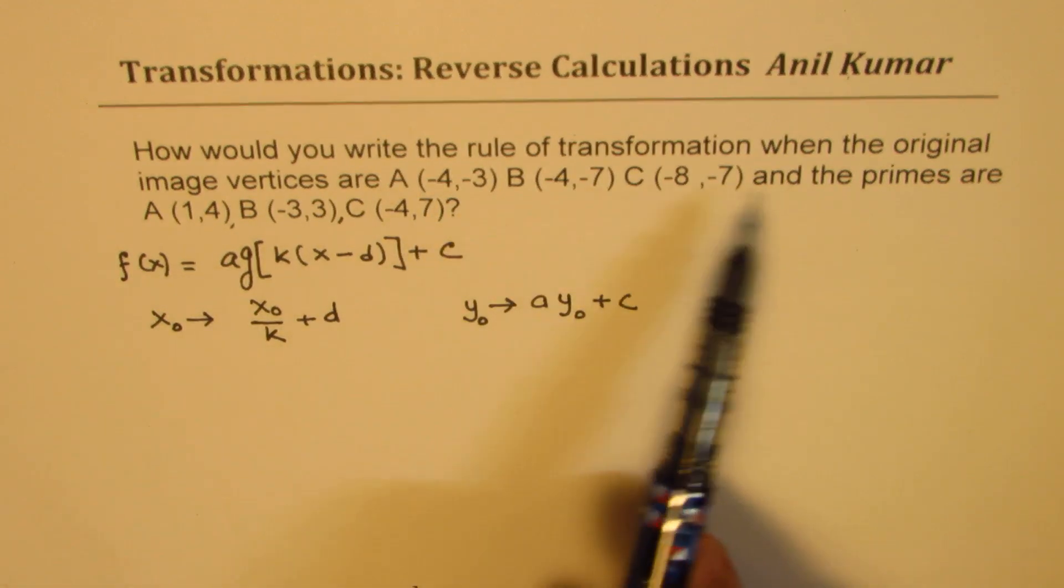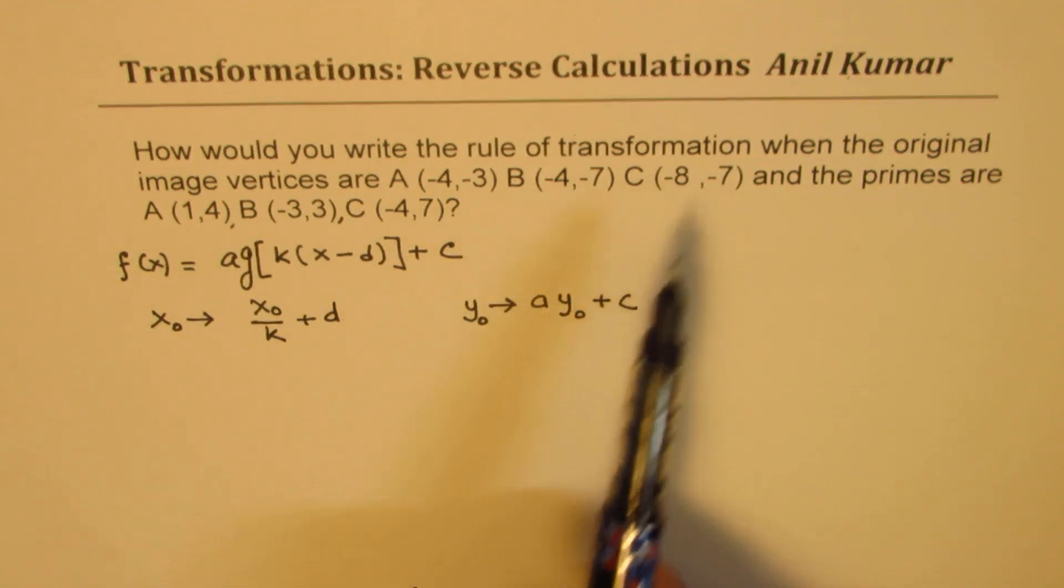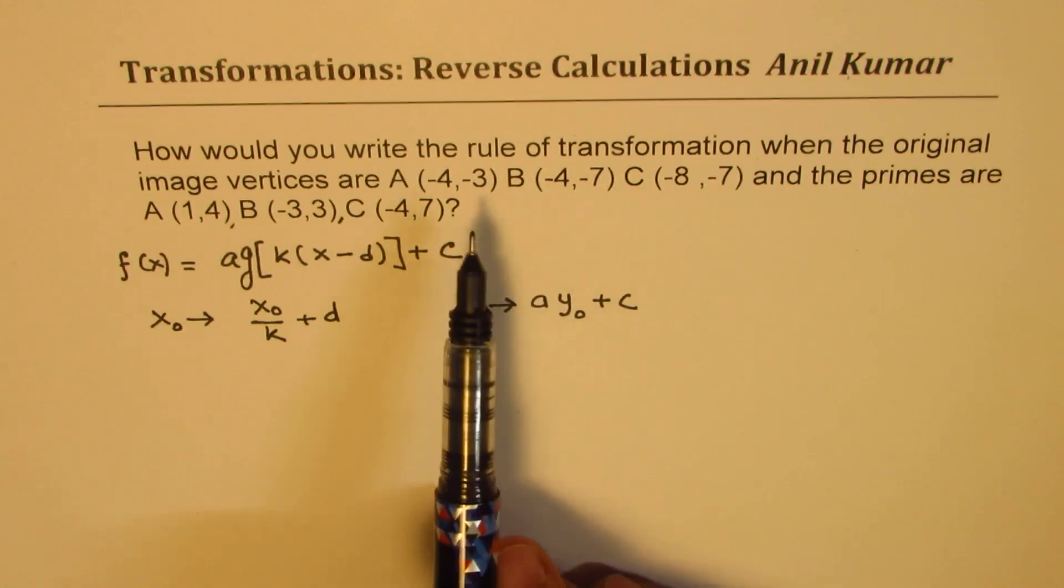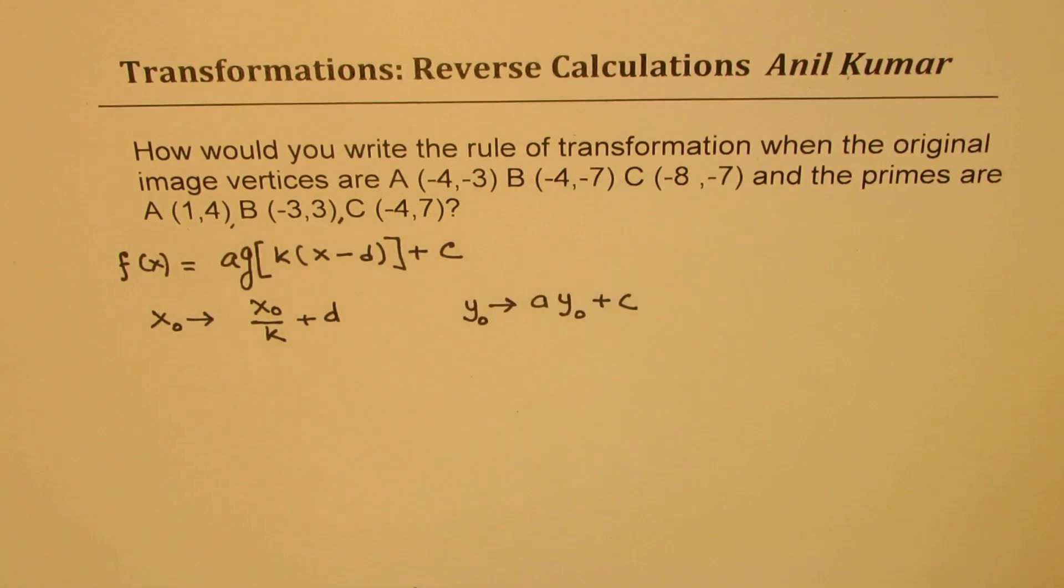Now we can take a few points. We'll take two of them since there are two variables, so we'll choose point A and C to get our results.